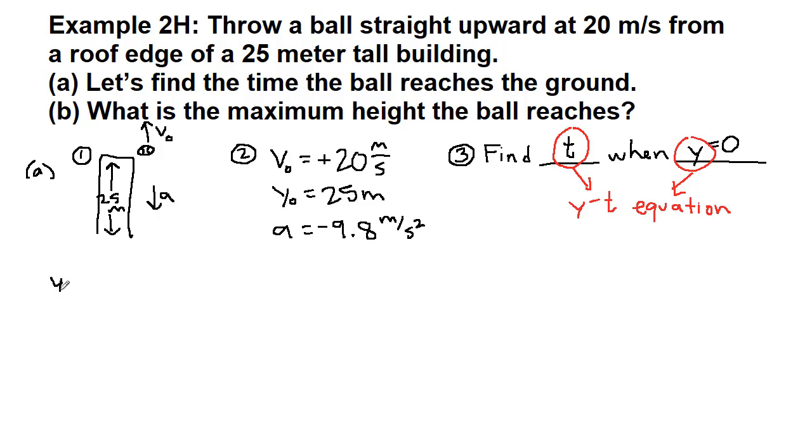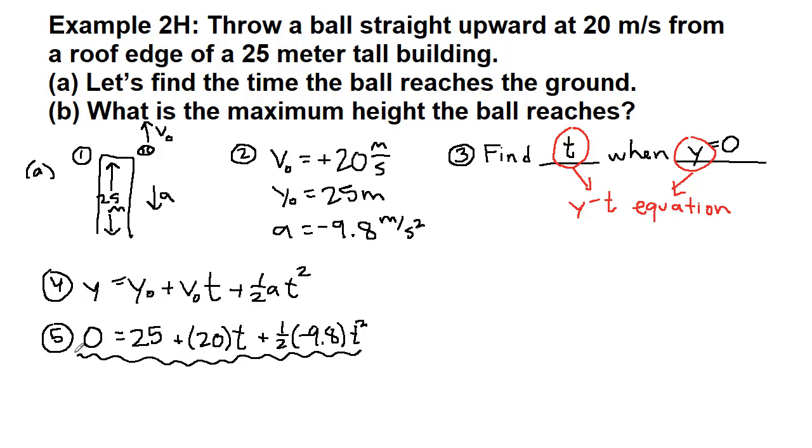Step four is always to write down the equation before we plug in numbers. Then step five is when we start to plug in numbers. The final y is zero because that's where the ground is. The initial y is 25 because that's where we started. We threw it upwards, so this is a positive 20 that's attached to t. Now we have one half times negative 9.8 times t squared. This is all of the physics.